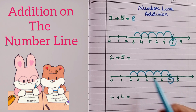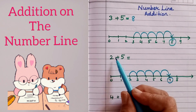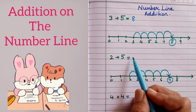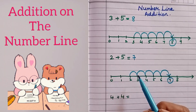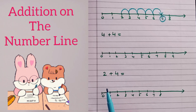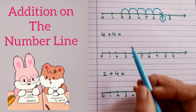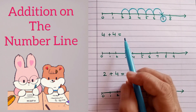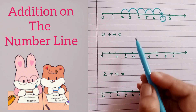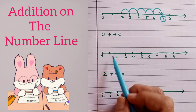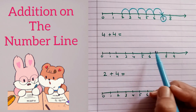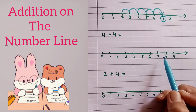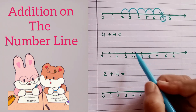The answer is seven, so here we write two plus five is equal to seven. Let us take one more example: four plus four. Here we will start with four and go up four numbers on the number line.